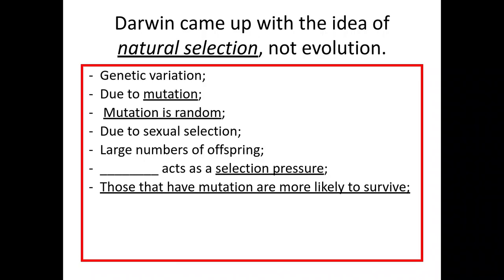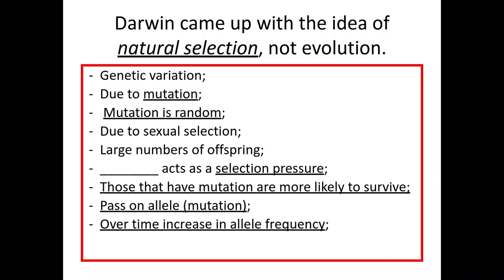Those that have that mutation that code for the darker wings are more likely to survive, and the allele that codes for the darker wings is going to be passed on. We'll get an increase in the allele frequency coding for those darker wings over time, and that is pretty much everything that we need to talk about there.